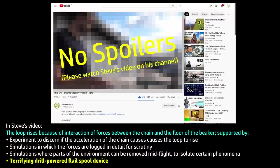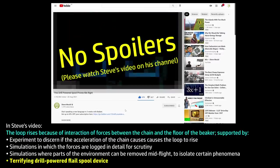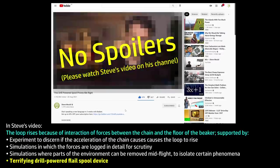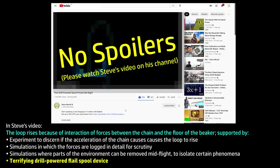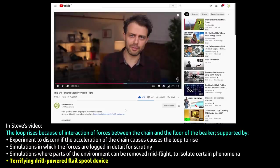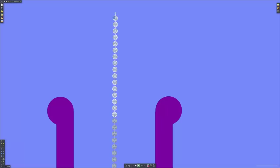Steve argues, and demonstrates quite compellingly, I think, that the loop rises because of forces that act against the floor of the beaker, or the heap of chain inside it. That, because ball chain has stiffness, or a minimum radius of curvature, it gets a kick off the bottom of the setup as it's pulled up. Now, I'm not going to go over all of Steve's arguments and experiments myself in great detail, because I think he already did that better than I can. He supports this view with experiments and physics simulations, so if you haven't seen the video, there's a link in this card and the video description.